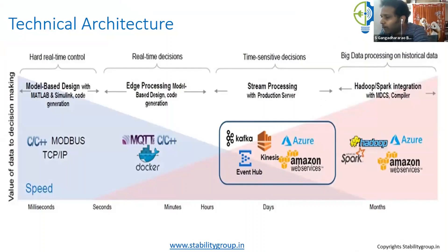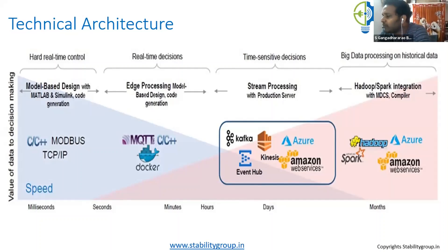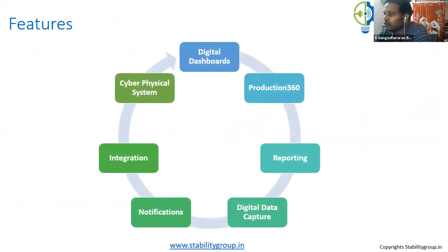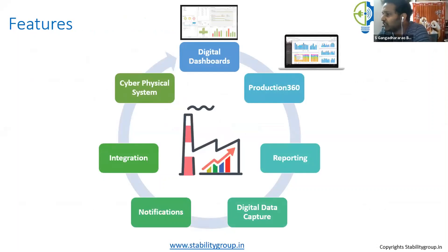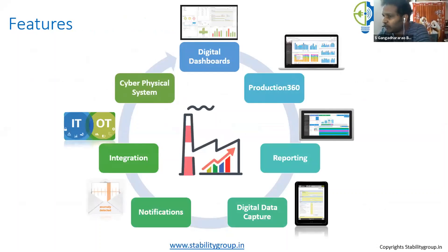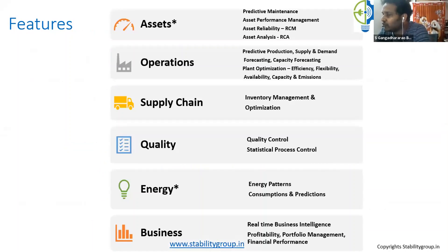To my knowledge, in the Indian context, only foreign companies — German and Japanese — are meeting the RAMI standards. RAMI stands for Reference Architecture Model for Industry 4.0, a three-dimensional architecture model covering product lifecycle, IT connectivity, and OT connectivity. In the technical architecture of a big data platform, you have communication protocol connectivity, edge processing, stream processing, and continuous data acquisition using Kafka-style streaming. Integration with Hadoop allows storing files, and features include digital dashboards, production 360, reporting, and alert notifications.